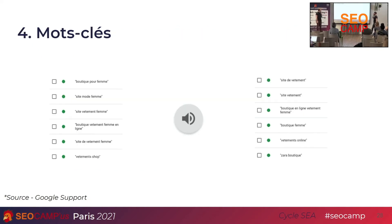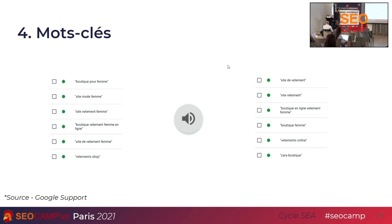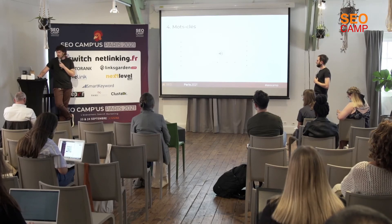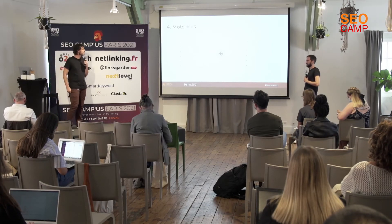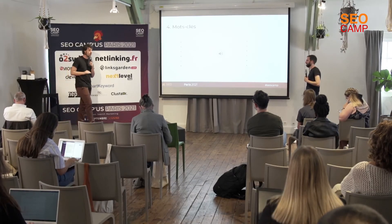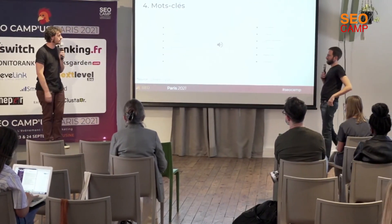La quatrième partie, ce sont les mots-clés — quelque chose de très important en SEA. Comment est-ce que Google décrit les mots-clés ? « La sélection de mots-clés pertinents et de haute qualité pour votre campagne publicitaire devrait vous aider à toucher les clients de votre choix quand vous le souhaitez. » On peut choisir le client et il convertit quand on décide — c'est vraiment ce qu'il nous promet avec l'utilisation des mots-clés.